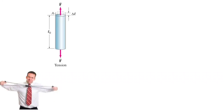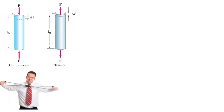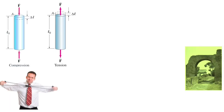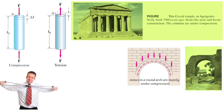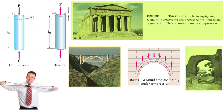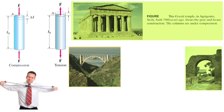As you can see in the figure, there is compression and tension. In compressive stress, the length of the body decreases. In tensile stress, the length of the body increases, as shown in the figures.